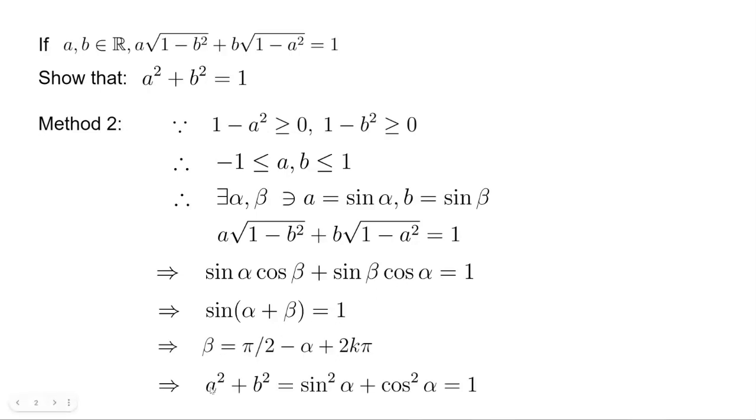All right. Then we look at a squared plus b squared. It's just sine squared alpha plus sine squared beta. And sine squared beta is cosine squared alpha. So this one is just sine squared alpha plus cosine squared alpha, which equals 1. And that proves the conclusion. And that's it for today.